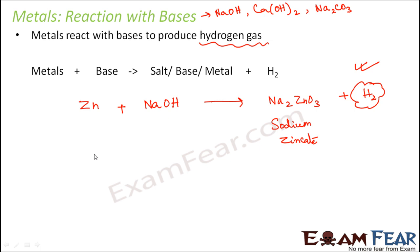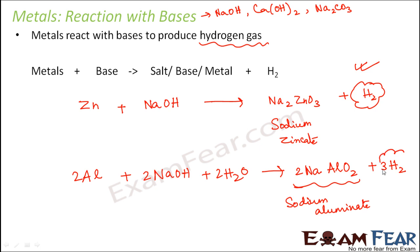Similarly, if you take example of some other metal, for example aluminum, when aluminum reacts with sodium hydroxide in presence of water, what does it form? It forms sodium aluminate plus hydrogen gas. So you can just balance the reaction.